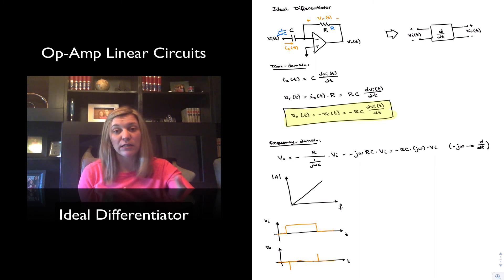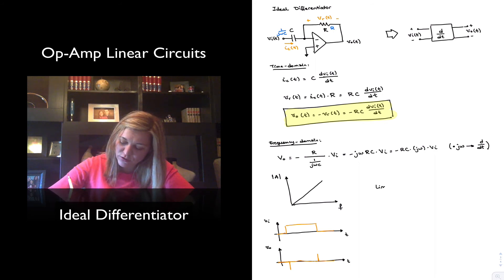And so what essentially that means is that any high-frequency noise that I have is going to get amplified by a lot. And so this circuit, even though in theory it works as a differentiator, in practice, if you have a noisy environment where you have high-frequency noise, that noise is going to be amplified more than your signal. So, a major limitation of the circuit, amplification of high-frequency noise.